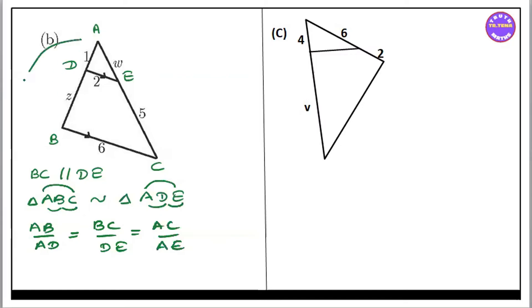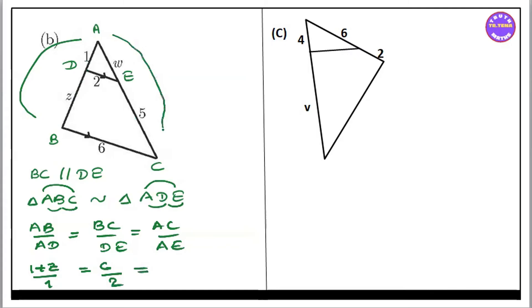AB is 1 plus 1 plus 1 plus 1 plus 1. AD equals 1. BC equals 6. DE is 2. AC equals w plus 5 and w plus 5 by AE. AE equals w.